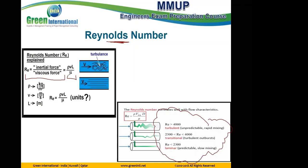Second thing is the equation — this is a very, very important equation. Reynolds number equals Rho*V*D over mu, or Rho*V*L over mu. This L is referred to as the diameter.